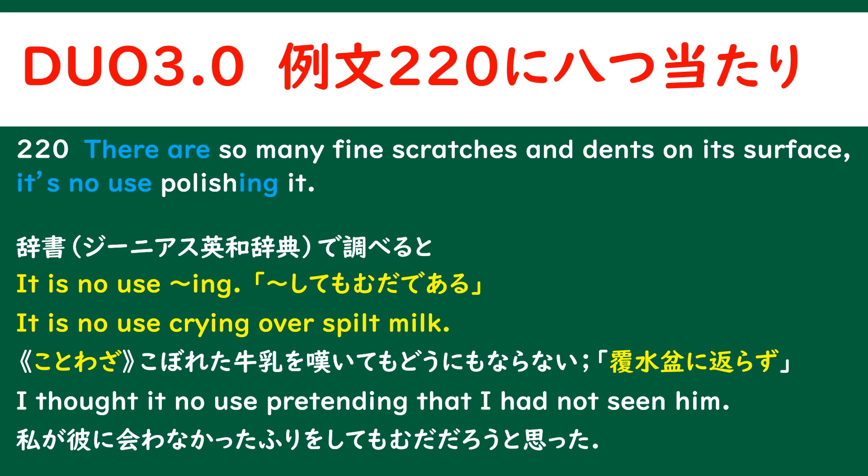覆水盆に返らずです。ところで、「It is」という風なbe動詞なくても使えてしまいます。「I thought it no use pretending that I had not seen him.」SVOC第五文型ということになるのでしょうか。私が彼に会わなかったふりをしても無駄だろうと思った。